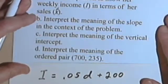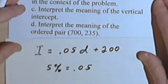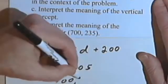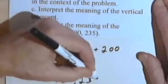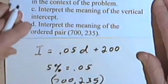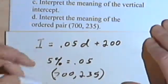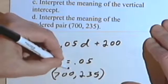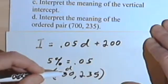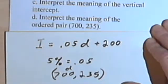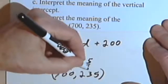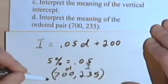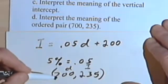Interpret the meaning of the ordered pair, let's see, what's that? 700, 235. Okay? So remember, the ordered pair, the first part of the ordered pair is the independent variable. That's dollars, that's the amount of her sales. The second part of the ordered pair is the dependent variable, or I, for income.